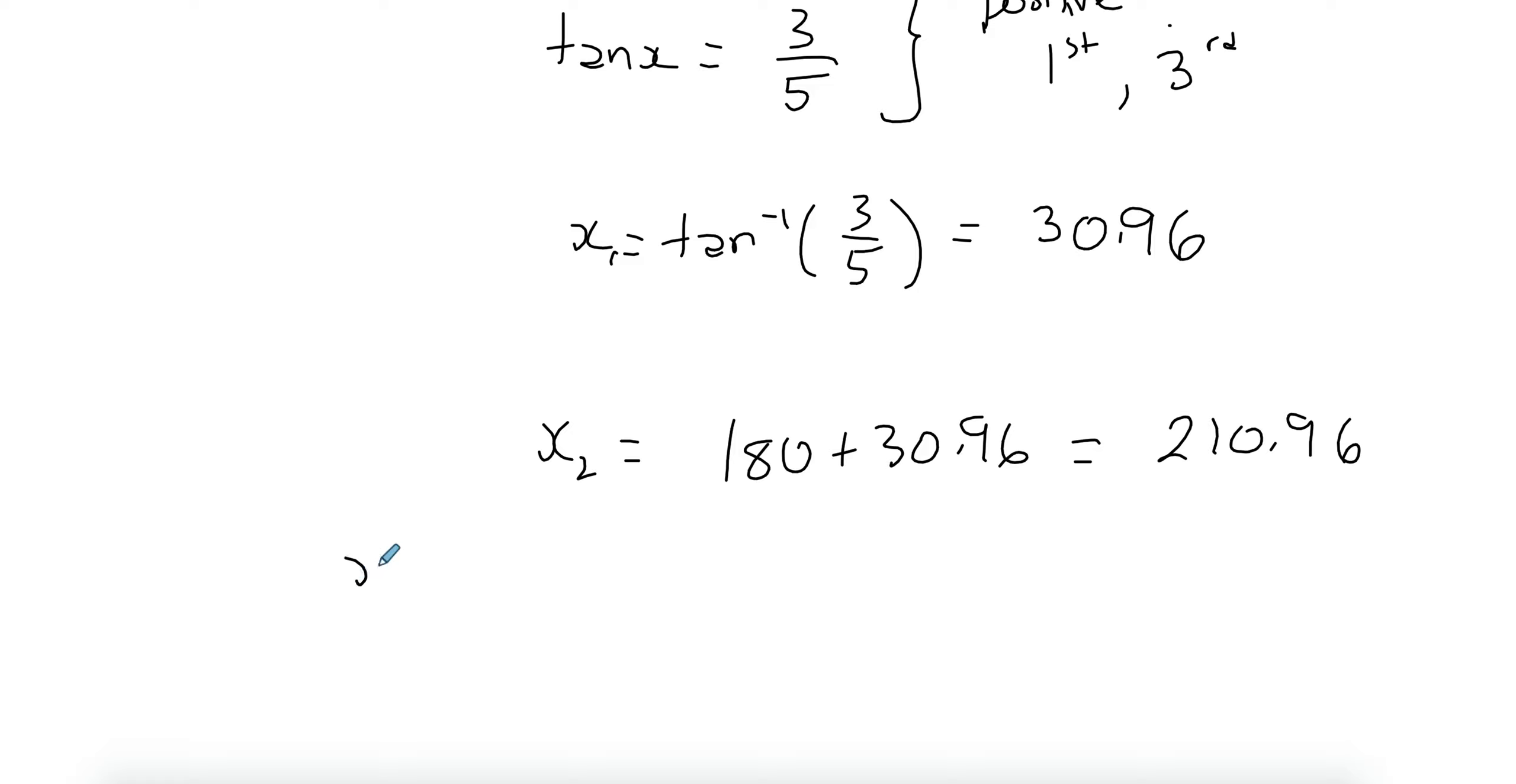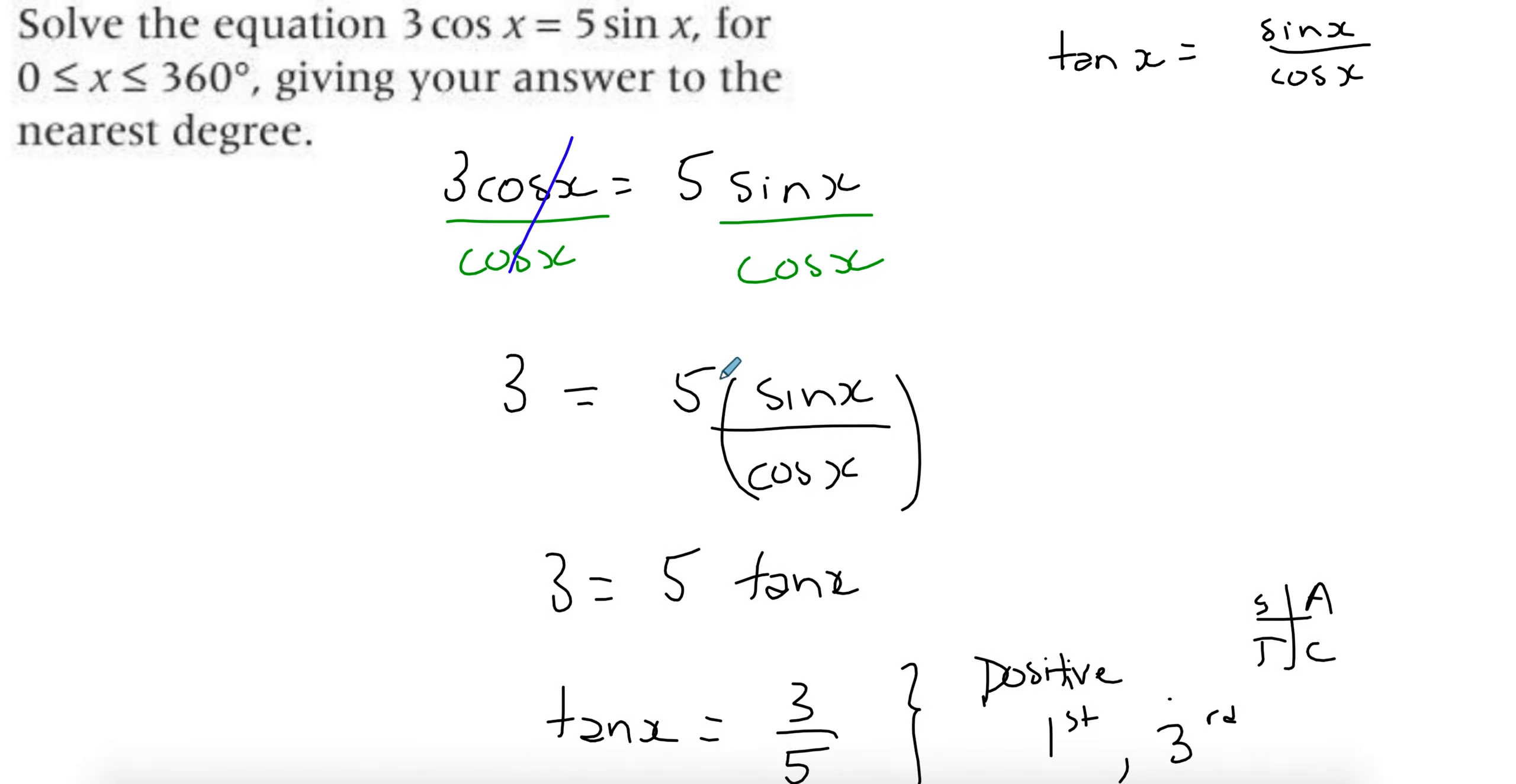Now, rounded to the 3 significant figures, you have your solutions as 31 degrees and the other one is 211 degrees. So hopefully this is an easy question to deal with. And then if you face anything similar, just try things out. So don't forget about the tan identity as well.